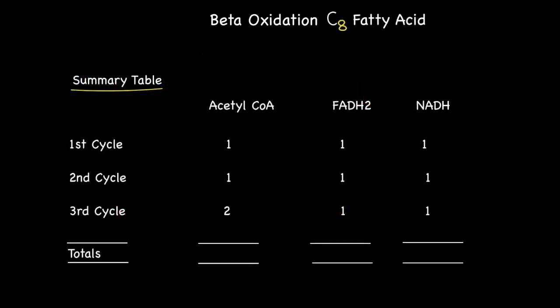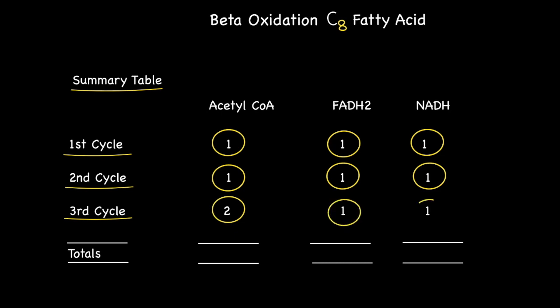Here is a quick summary table of the products from the beta oxidation of a C8 saturated fatty acid. During the first cycle one acetyl CoA is produced with one FADH2 and one NADH. During the second cycle one acetyl CoA is produced with one FADH2 and one NADH. And during the final cycle we produce two acetyl CoAs, one FADH2 and one NADH. So in total the number of acetyl CoAs produced from the complete beta oxidation of a C8 fatty acid is 4. While the number of FADH2 is produced is 3 and the number of NADH is produced is 3 as well.